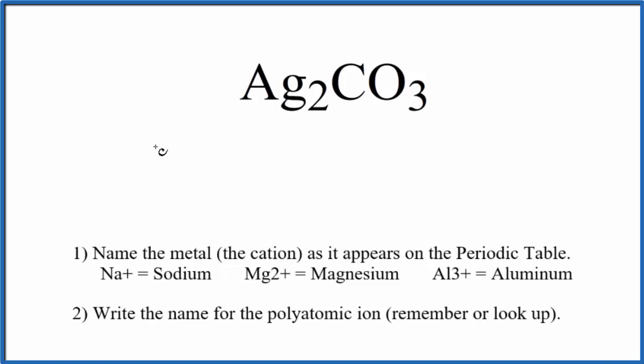So first we'll write the name for Ag. That's silver. Next, for the carbonate, you've either memorized that carbonate is CO3, 2-, or, if you're allowed, you look it up on a table of common polyatomic ions.